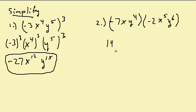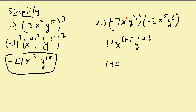Let's look at this one. I'm multiplying, so negative 7 times negative 2 is 14. Then x times x to the fifth — I have like bases so I add the exponents, and remember this exponent is understood to be a 1 — so I have x to the 1 plus 5. Then y to the fourth times y to the sixth is y to the 4 plus 6. So this is 14x to the sixth y to the tenth.